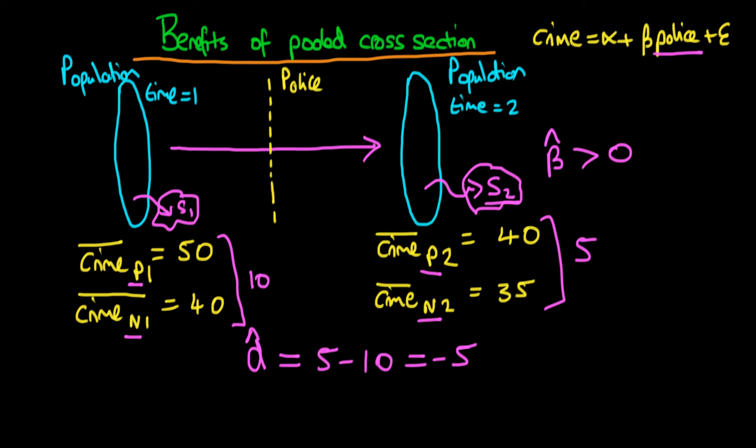But the problem with this particular estimate, this minus 5 here, is that there is no simple way to calculate its standard error. So essentially what we've done is we've estimated two OLS models at two different points in time. We actually can't do any inference. So what can we actually do?